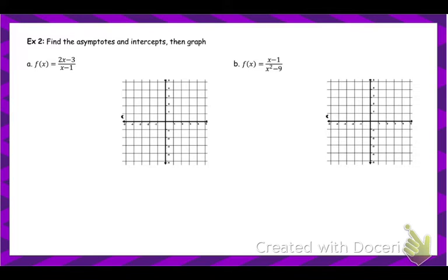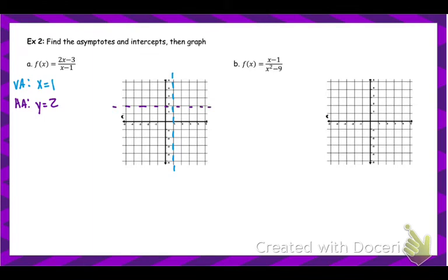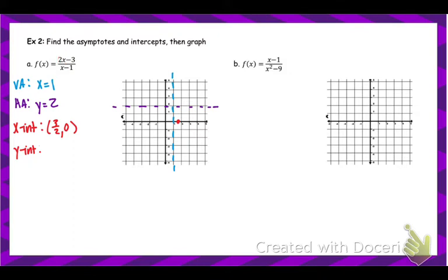Alright, let's actually graph some of these. We find the asymptotes and intercepts, then use that for a rough sketch. Starting with the vertical asymptote: the bottom equals zero when x equals 1, so x equals 1 is a vertical asymptote. For the horizontal asymptote: both top and bottom are degree 1 — same degree — so divide the leading coefficients: 2 divided by 1 gives y equals 2. For the x-intercept, set the top equal to zero: x equals 3/2, so the point is (3/2, 0). For the y-intercept, plug in zero: negative 3 divided by negative 1 is 3, so the y-intercept is (0, 3).